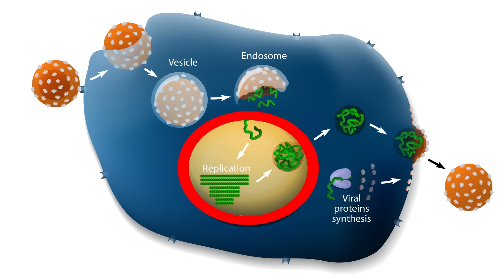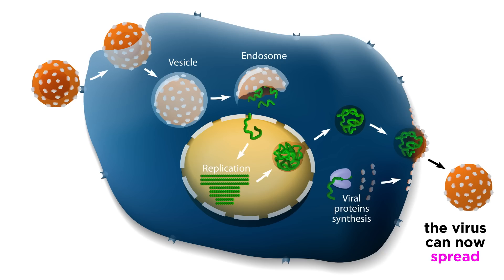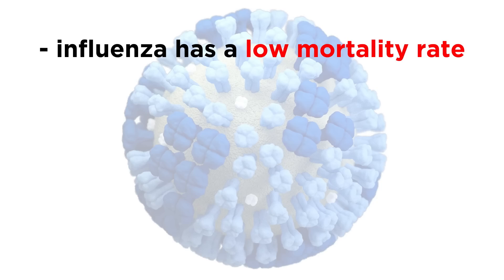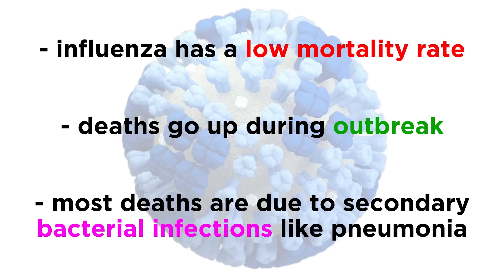From there, the virus replicates its RNA and builds more of its own proteins using the host cell's machinery. Within six hours, mature virions bud out of the host cell, taking some of the host cell's membrane with them, and the virus can then spread rapidly to nearby cells. In most cases, a small percentage of people with influenza die, but when outbreaks are widespread, the number of people who are likely to die goes up. Most of the deaths that occur from influenza outbreaks are from secondary bacterial infections like pneumonia.